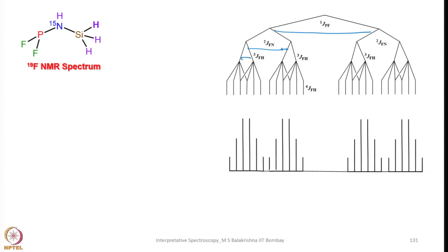This is the 3-bond FH coupling due to hydrogen present on nitrogen. Now for the 4-bond coupling, that would split each line into a quartet because of the smaller spacing of FH. The magnitude is much smaller, so what happens is the first 2 lines of the second signal and the last 2 lines merge. As a result the intensity goes up, and the same thing happens for all 4 signals — they are merging because of closer spacing. It can now show 1, 2, 3, 4, 5, 6 lines with varying intensity, appearing like a sextet in each case — whereas each line should have been a quartet, it is sextet because these two are merging. As a result we get a typical 19F NMR spectrum shown here.